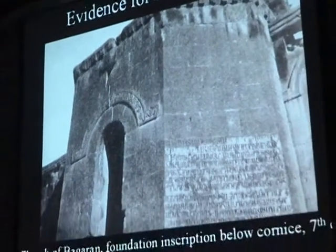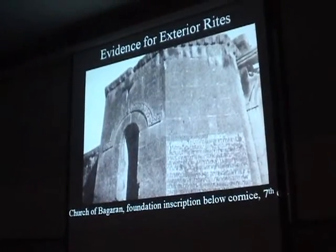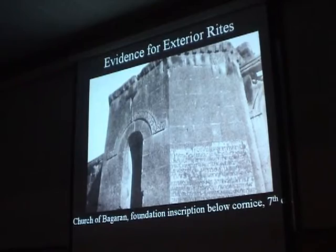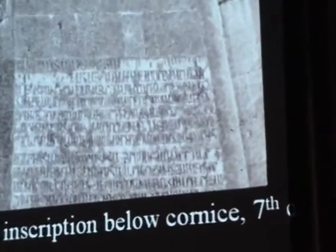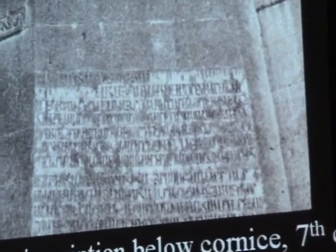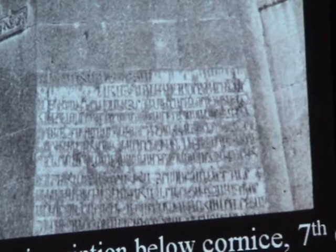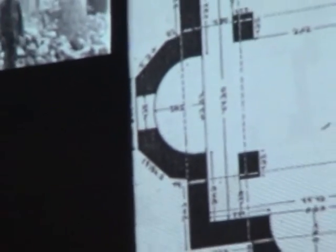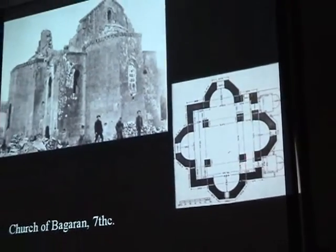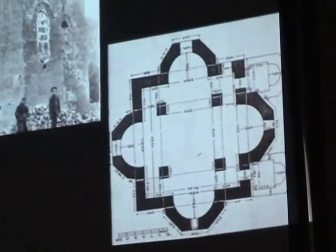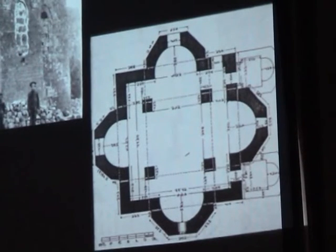In my own work on the 7th century — which is a little bit earlier — I've been working very closely on the role of exterior features, like inscriptions and exterior sculpture, in rites of consecration. It appears, based on the evidence from the inscriptions and from the sculpture, that the exterior of the church was used in ritual, in ceremonial — so it wasn't only the interior. We have evidence of rites in which the congregation, together with the clergy, would actually walk around the structure, evidenced by inscriptions which wrap around the entire exterior.